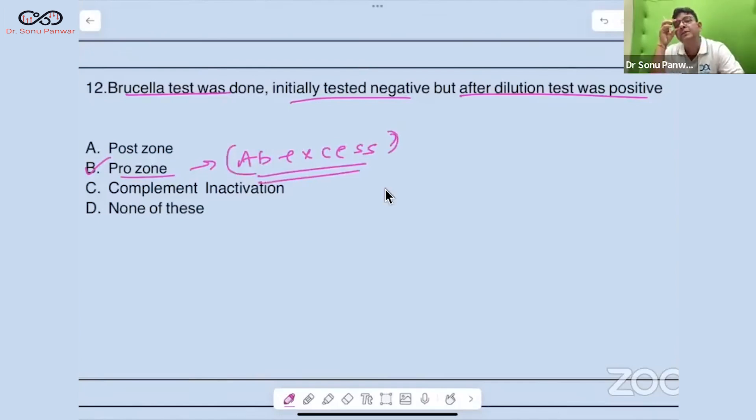In this, there is a phenomenon termed as zone of equivalence. Antigen-antibody interaction occurs in the zone of equivalence. If more antibodies are there, that is termed as prozone. If more antigen is there, that's postzone.